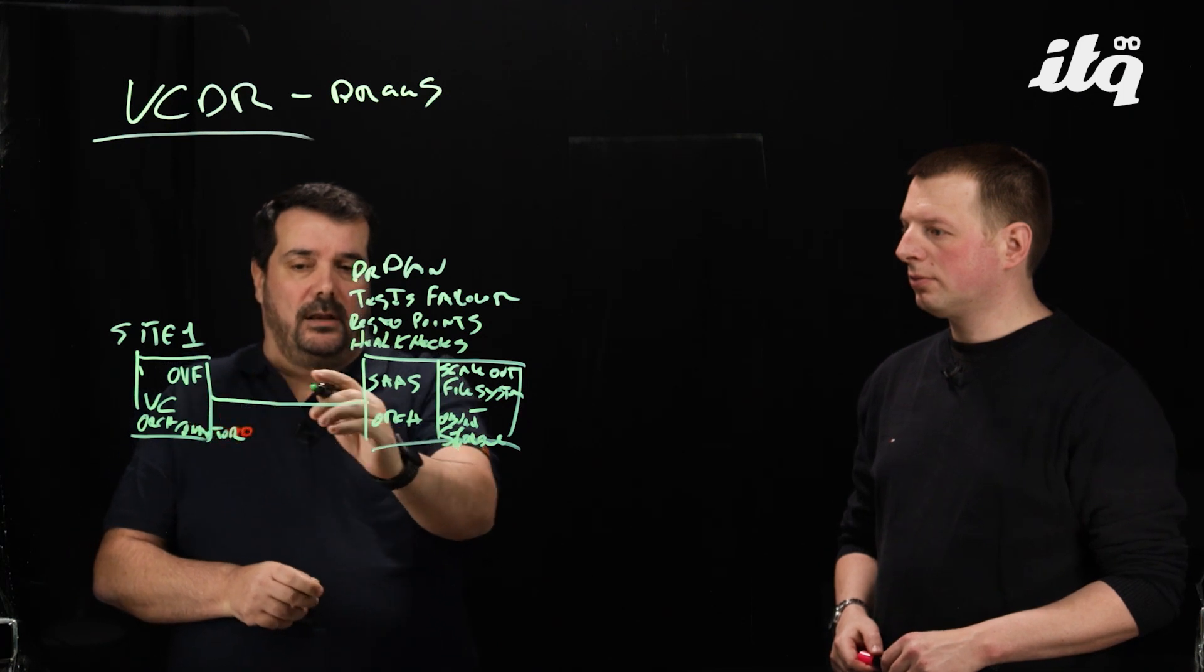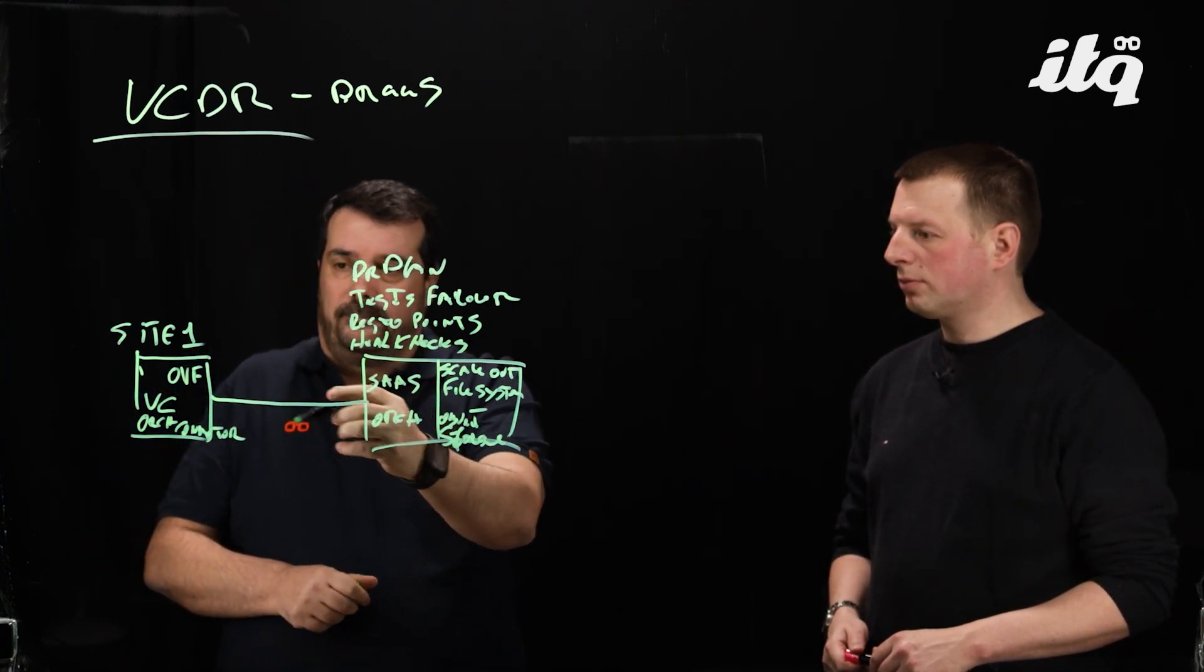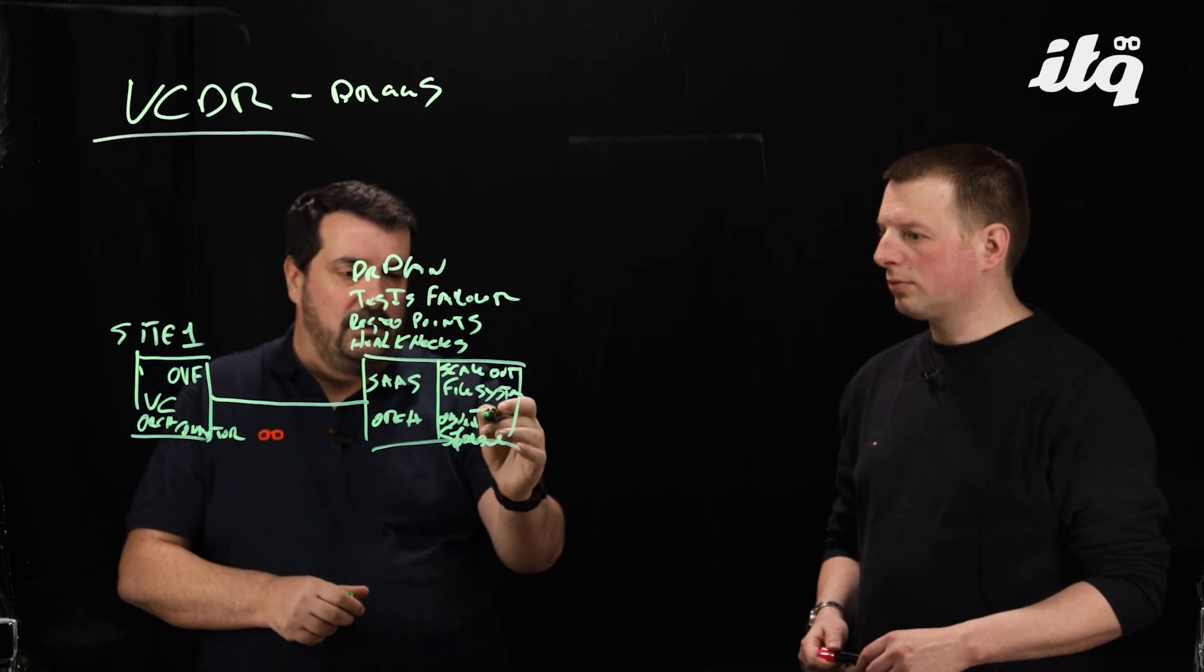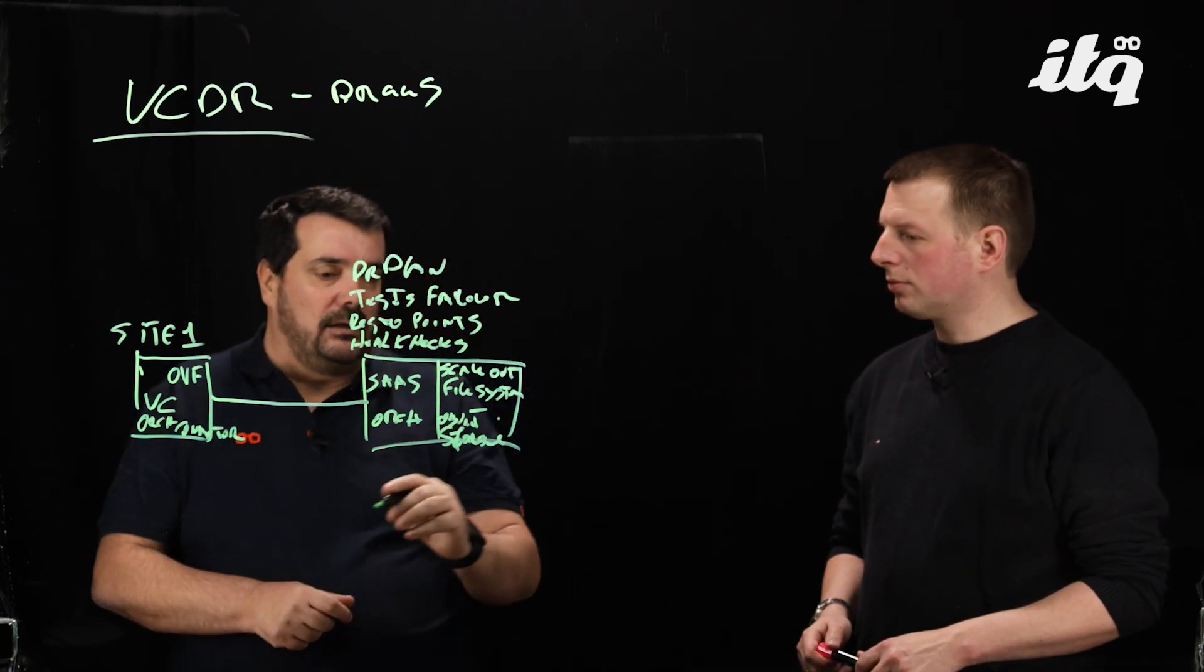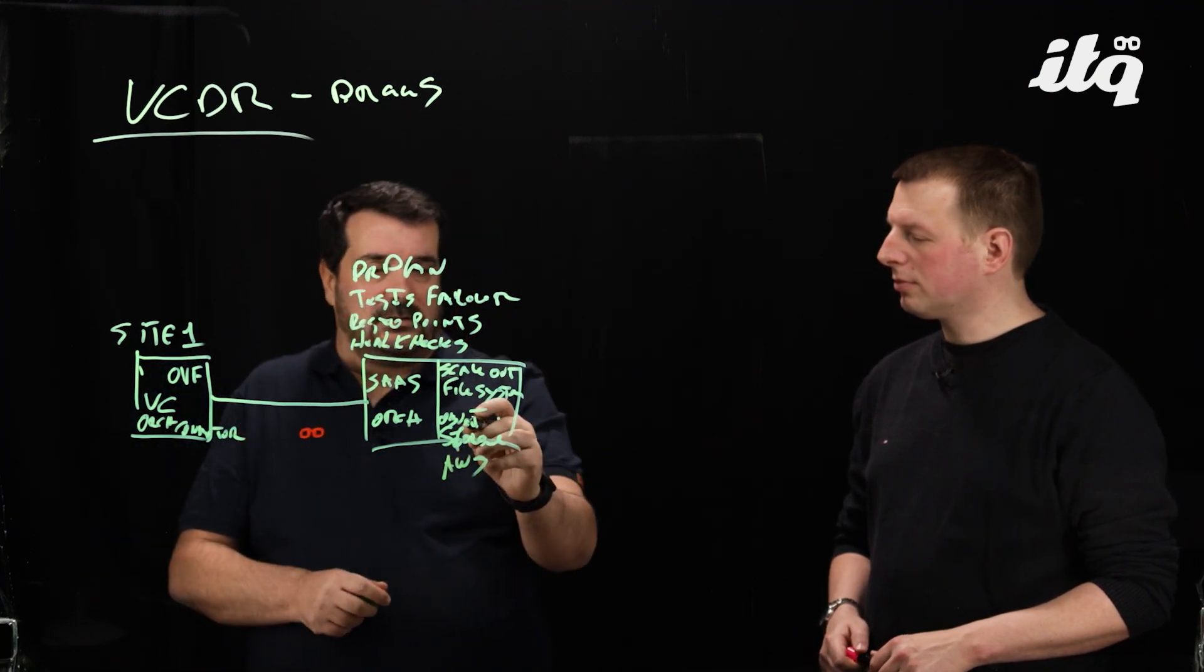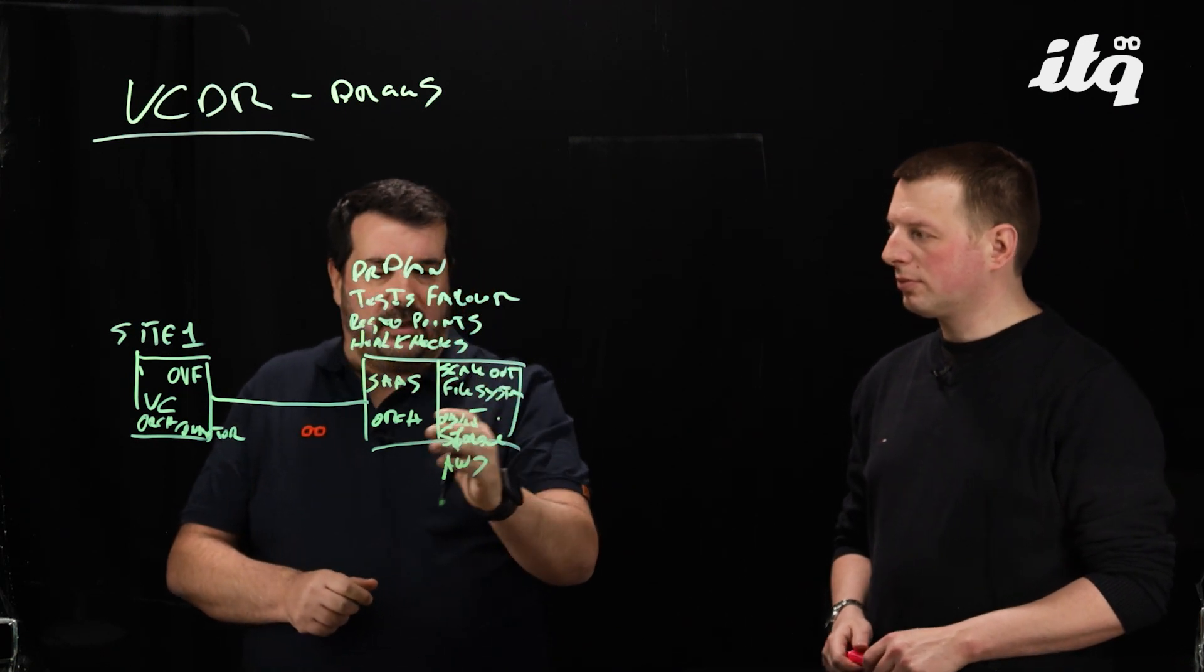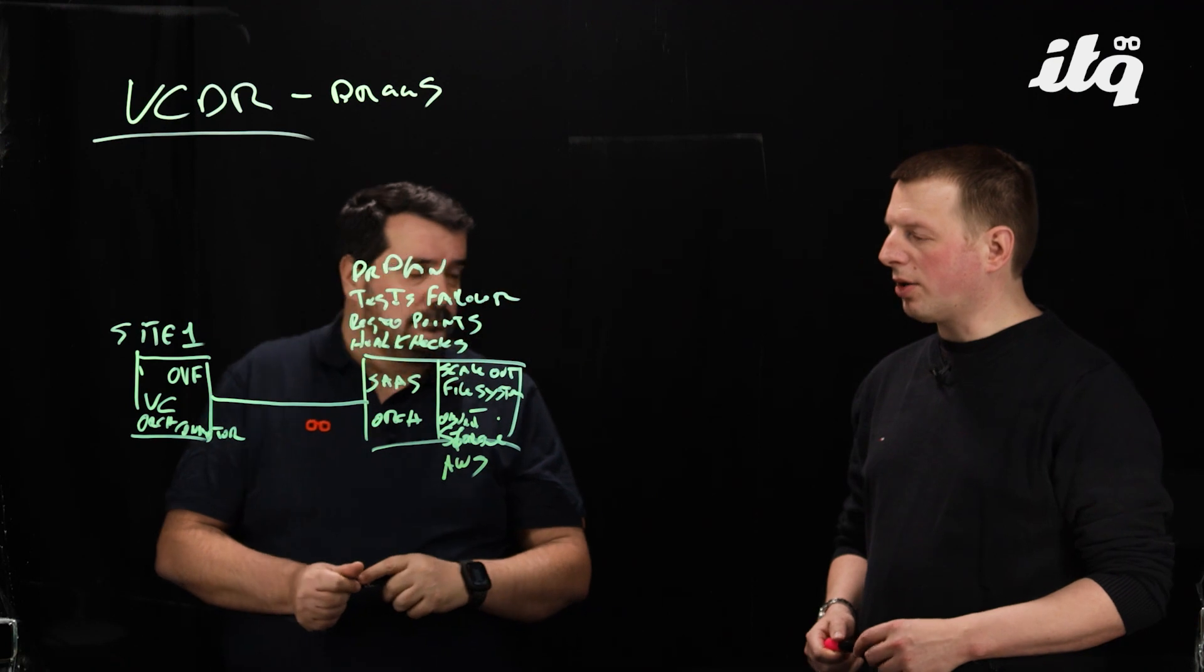And when you replicate all the VMs from your site one, in this case site one to your site orchestrator, you'll be stored here. And I forget to mention that this is AWS. So this is an AWS scale-out file system. Everything is stored as an object storage here.